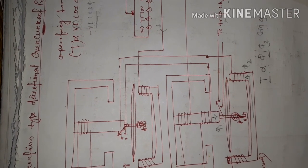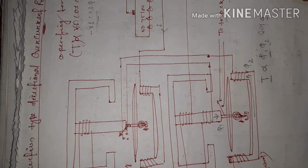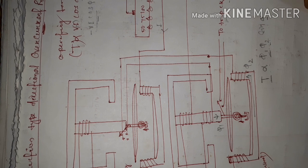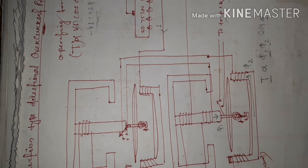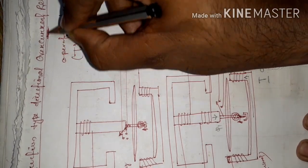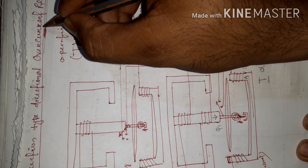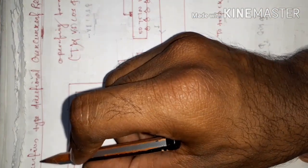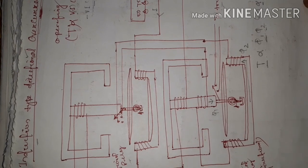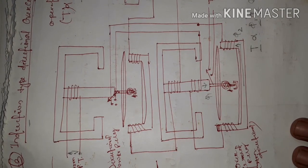Hence we can conclude that this type of relay depends upon two values: first, the magnitude of fault current, which must exceed the predetermined value, and second, the direction of fault current. Due to the magnitude of the fault current it is called overcurrent relay, and due to the direction it is called directional. Combined, it is called induction type directional overcurrent relay. It is called induction because its working principle depends upon mutual induction — when the flux links with another coil.